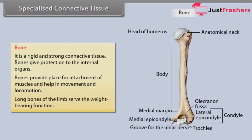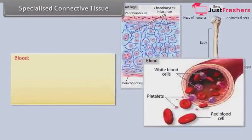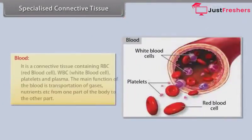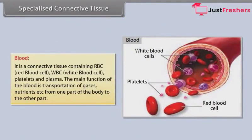Long bones of the limb serve the weight-bearing function. Blood is a connective tissue containing red blood cells (RBC), white blood cells (WBC), platelets, and plasma. The main function of blood is transportation of gases, nutrients, etc., from one part of the body to another.